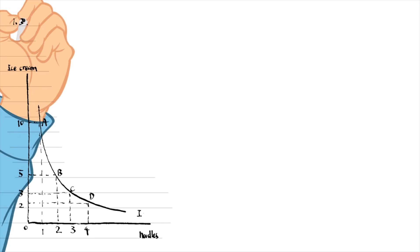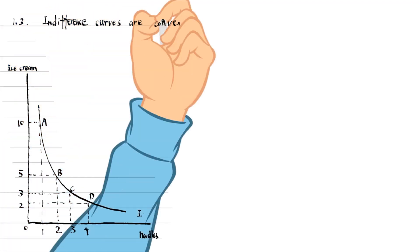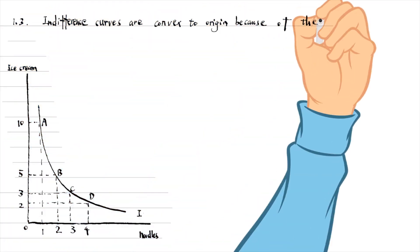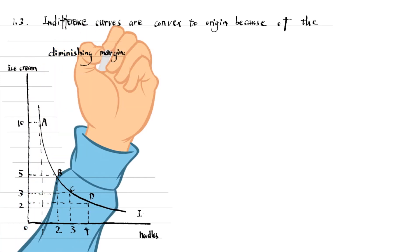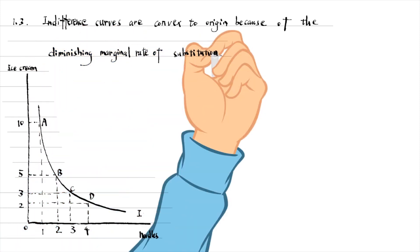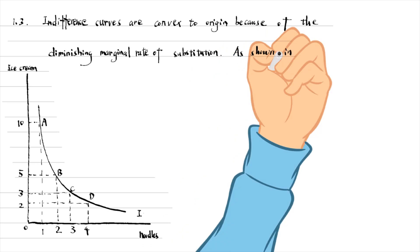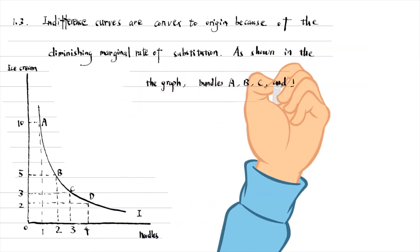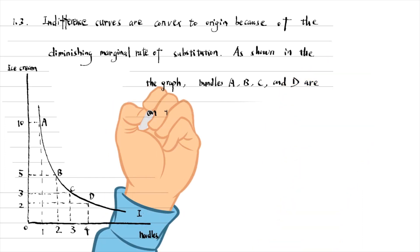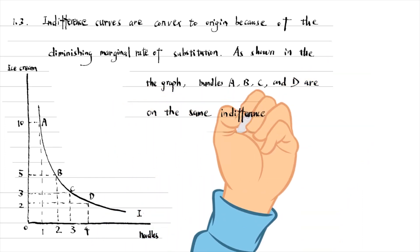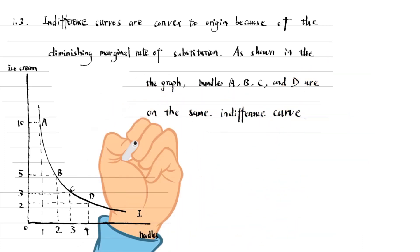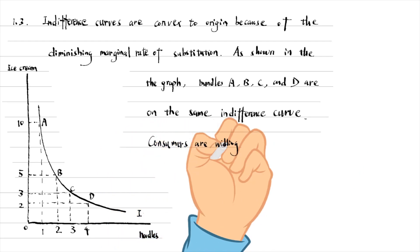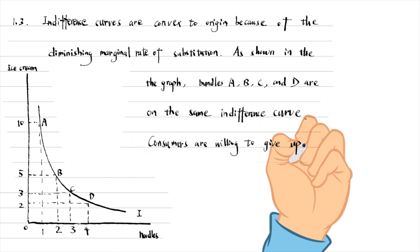Indifference curves are convex to the origin because of the diminishing marginal rate of substitution. As shown in the graph, bundles A, B, C and D are on the same indifference curve. Consumers are willing to give up fewer and fewer ice cream cones to obtain one more box of noodles.